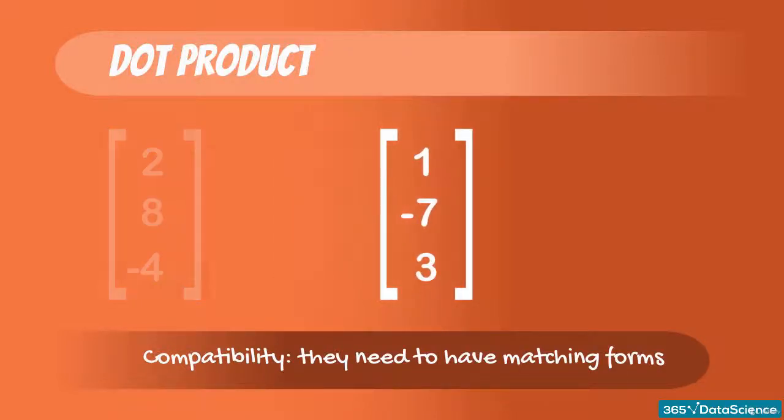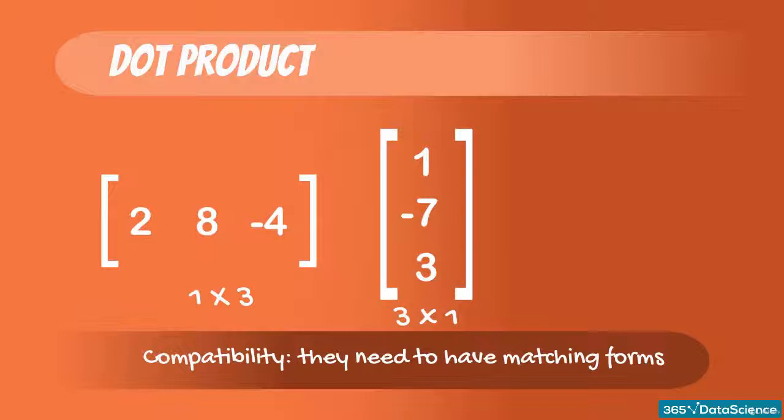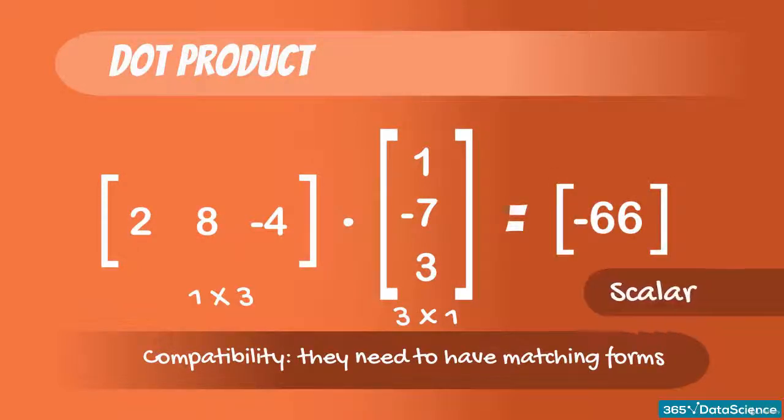To find their dot product, we transpose the first one and get a 1 by 3 times a 3 by 1 form. This is done because when we have a dot product, we always multiply a row vector times a column vector. Remember that! The result of this multiplication is a 1 by 1 form, or a scalar. We reach this scalar by multiplying the corresponding elements and summing everything up.